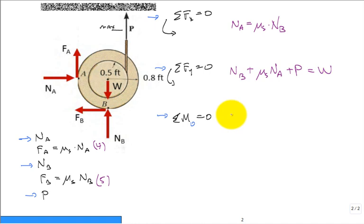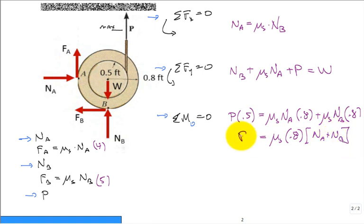And then we have the sum of the moments about the origin 0.0. We have the P at a moment arm of 0.5 foot, and that's making it want to rotate counterclockwise. Everything else makes it want to rotate clockwise, which is our frictional force F of A, but F of A is mu sub S N sub A, and its moment arm distance is 0.8, as well as F of B, which is mu sub S N sub B times the same moment arm 0.8. You could simplify this a little bit. You could say mu sub S times 0.8 times the sum of N sub A plus N sub B.